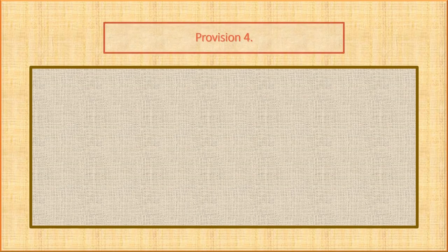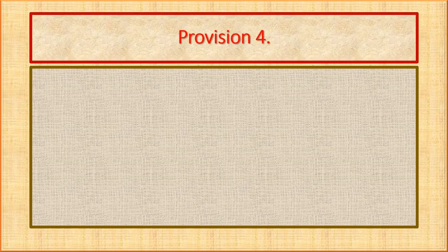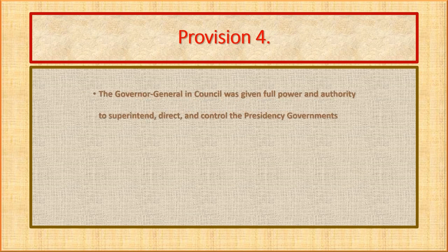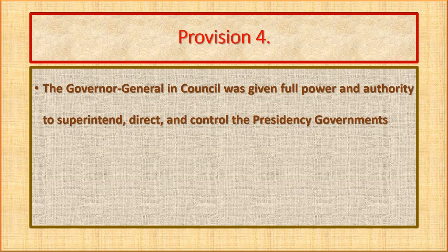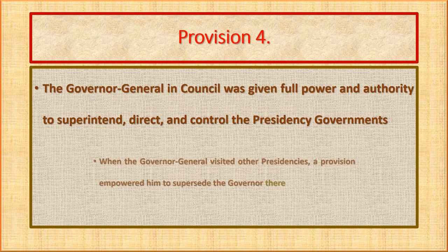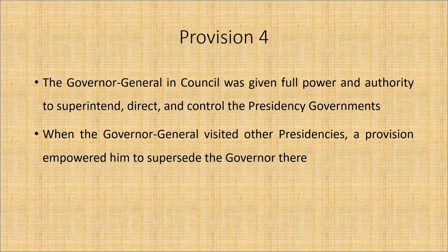In Provision 4, the governor general in council was given full power and authority to superintend, direct, and control the presidency governments. When the governor general visited other presidencies, a provision empowered him to supersede the governor there.